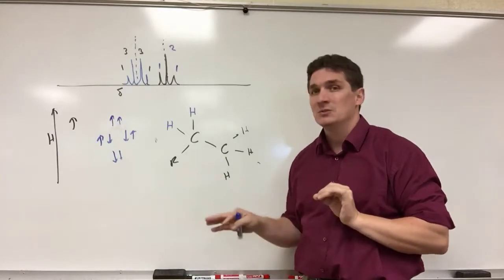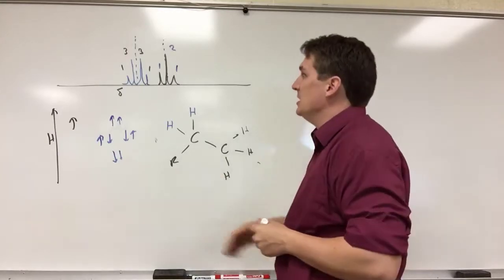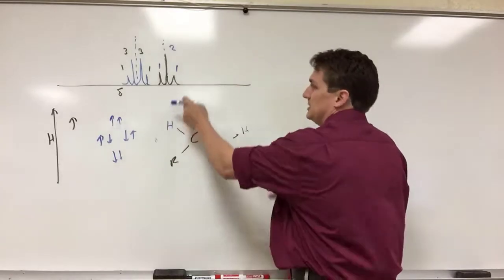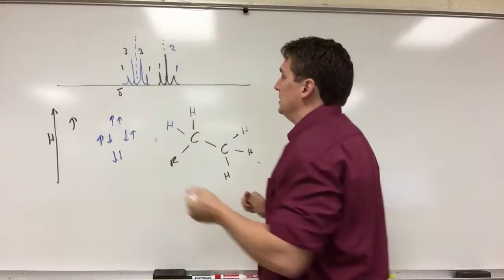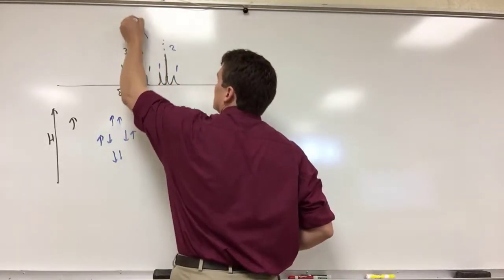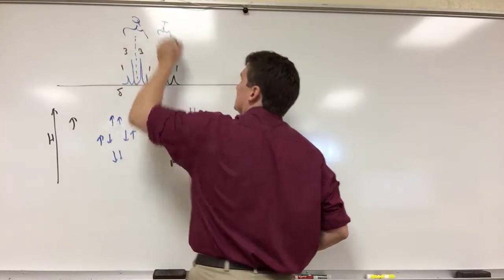We're going to switch this R group to something a bit more complicated in just a minute. So we would say this is a quartet. These three C2, so that makes this a triplet. So your quartet and your triplet.